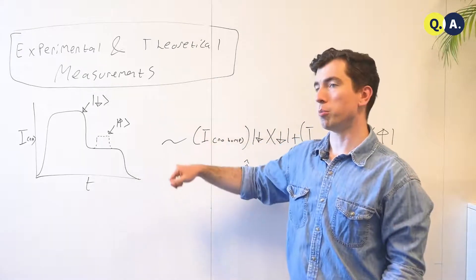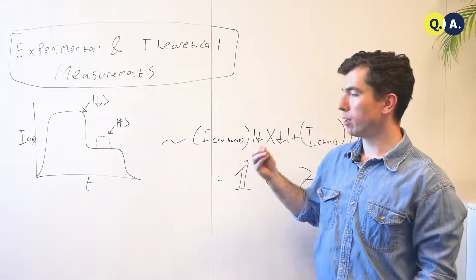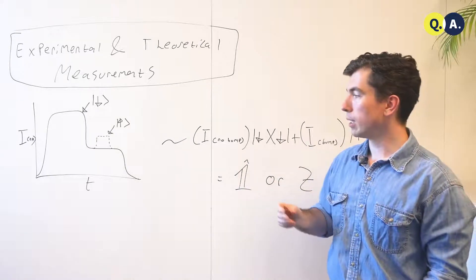And if it's in the up state, there will be a bump. And this is a large macroscopic classical signal that they can detect.